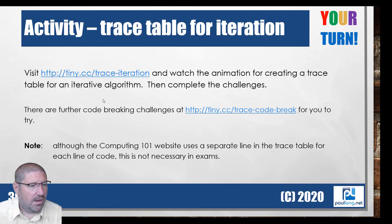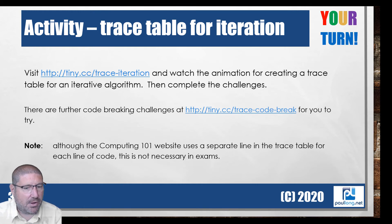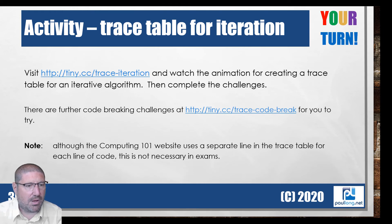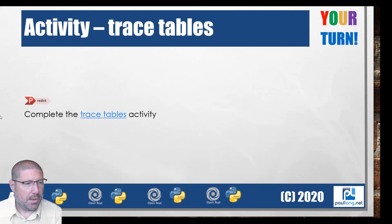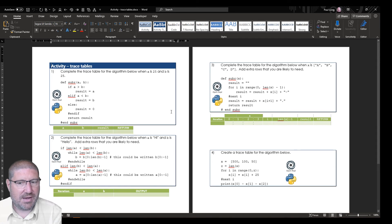Here is an example slide where students are being directed to complete some challenges for trace tables. In this particular example there's no link to an activity worksheet because the instructions are directly here, and they're also mirrored in the textbook pages - so students just follow these links and the instructions on the screen. Now I'm going to skip another few slides and look at how we can use an activity that is hyperlinked. This slide takes us to a hyperlink for the trace tables activity. You can see along here there are a number of different Python files that students may need - they don't have to use them - and we can select this activity worksheet which is simply a Word document and it will open for us.